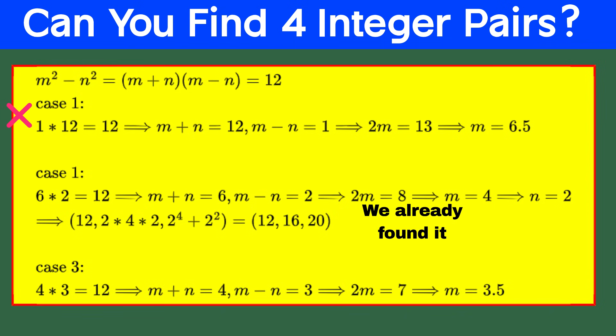Case 3. If m plus n equals 4 and m minus n equals 3, adding these gives us 2m equals 7, so m equals 7 divided by 2, which is 3.5. Since m isn't an integer, this case doesn't work either.